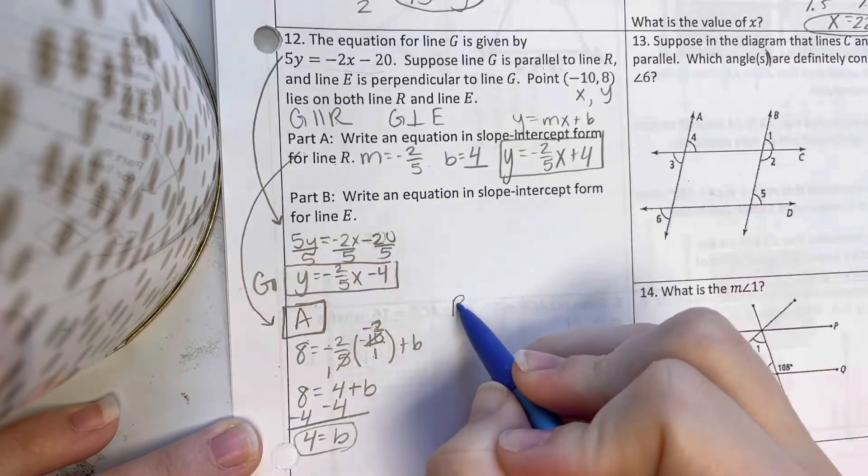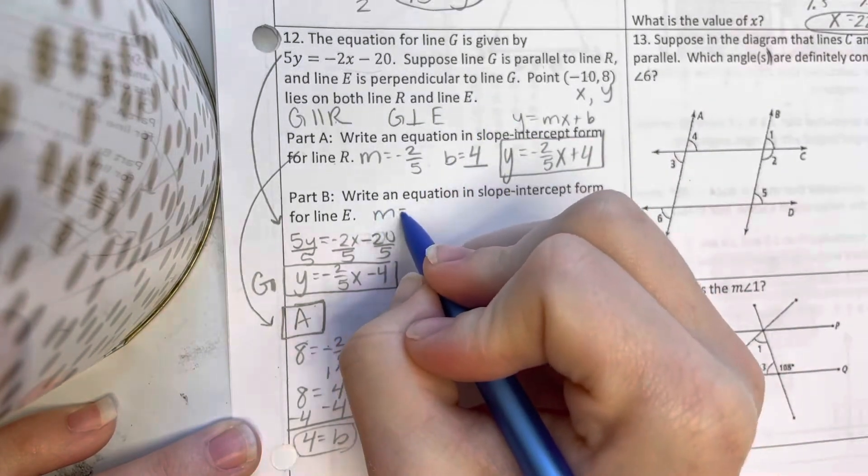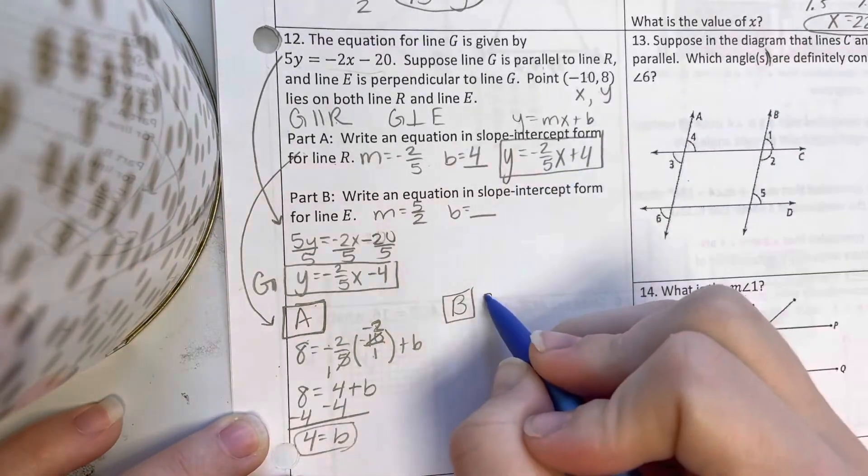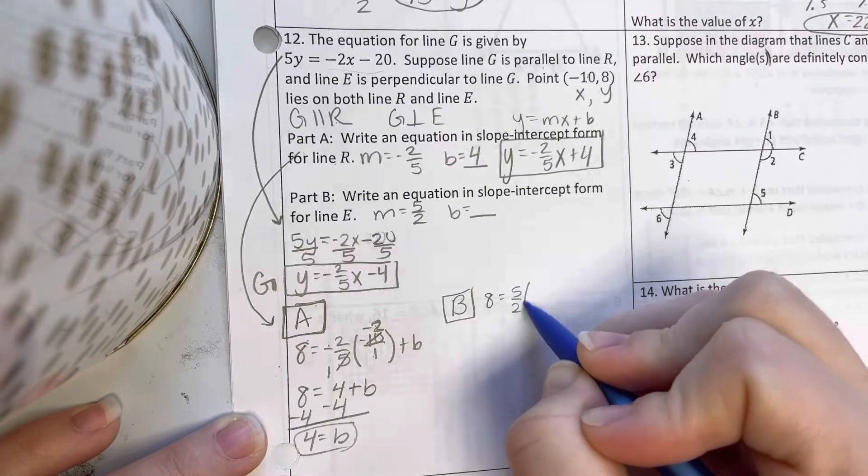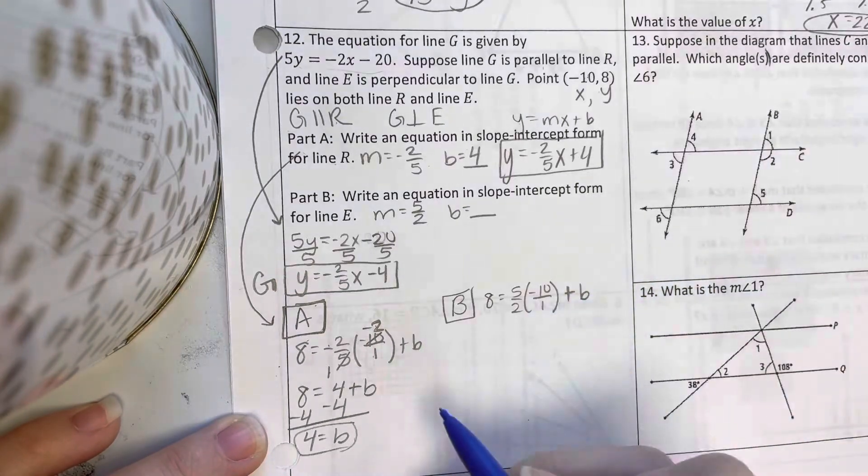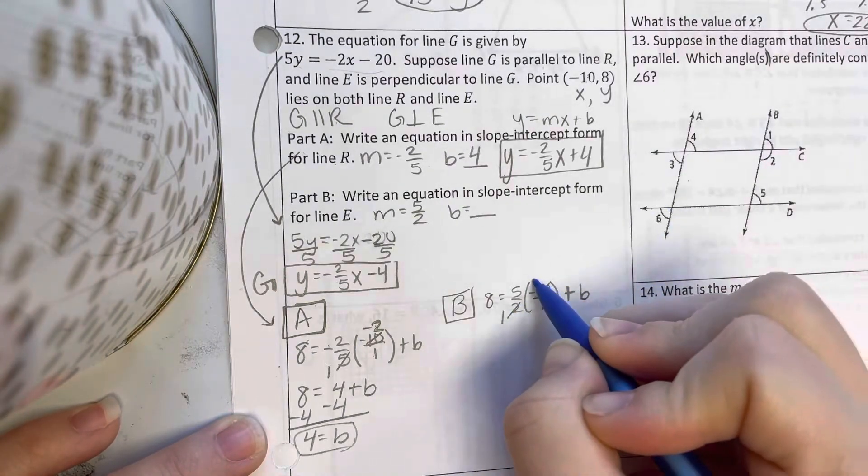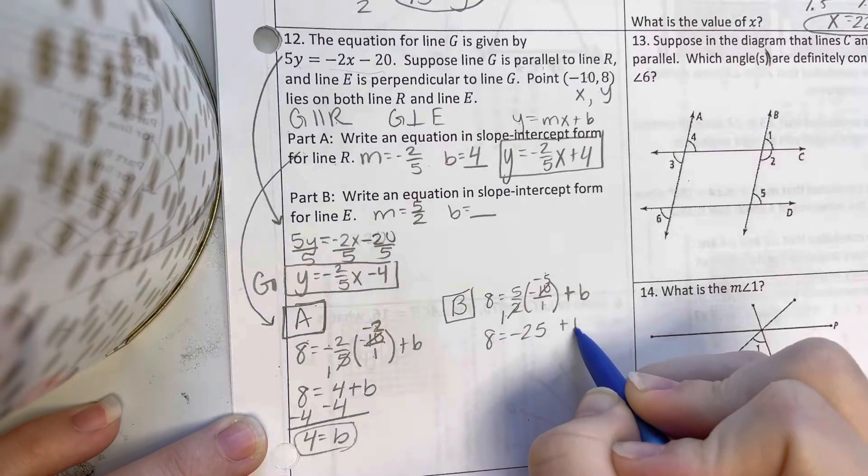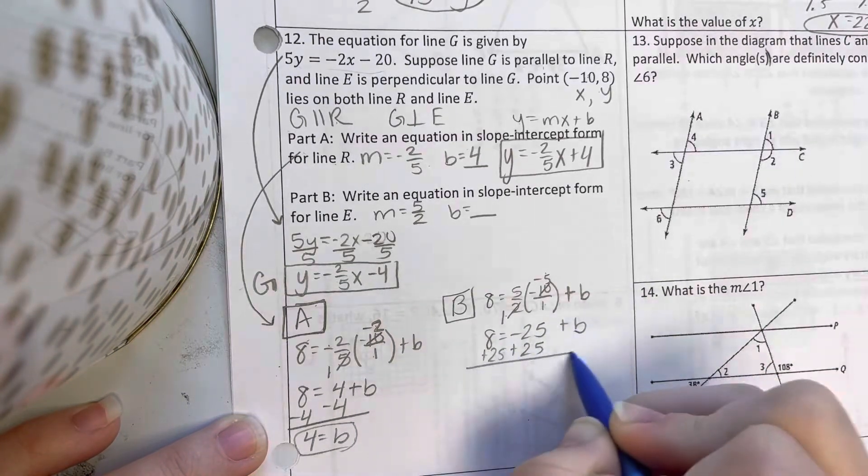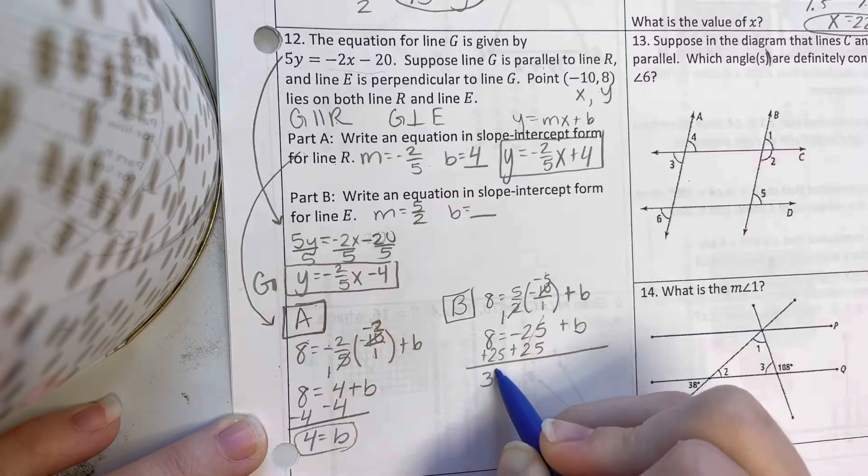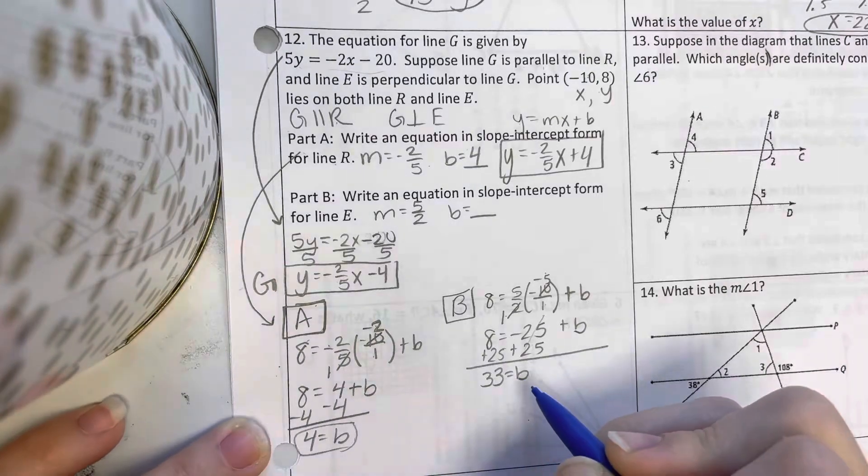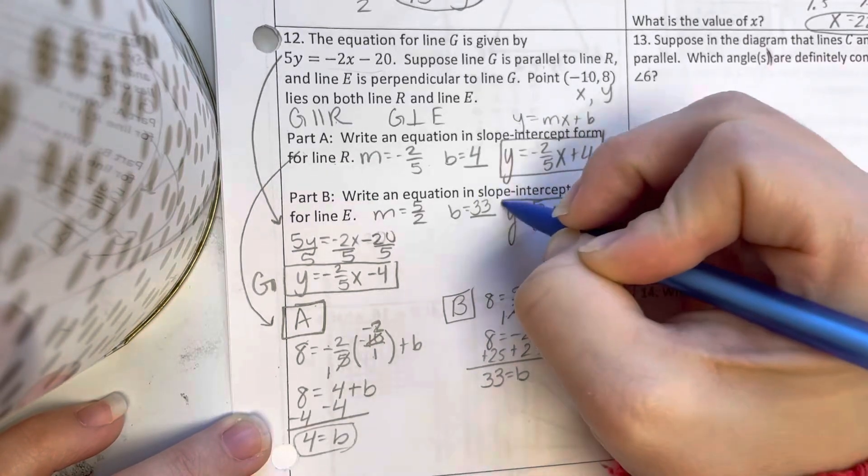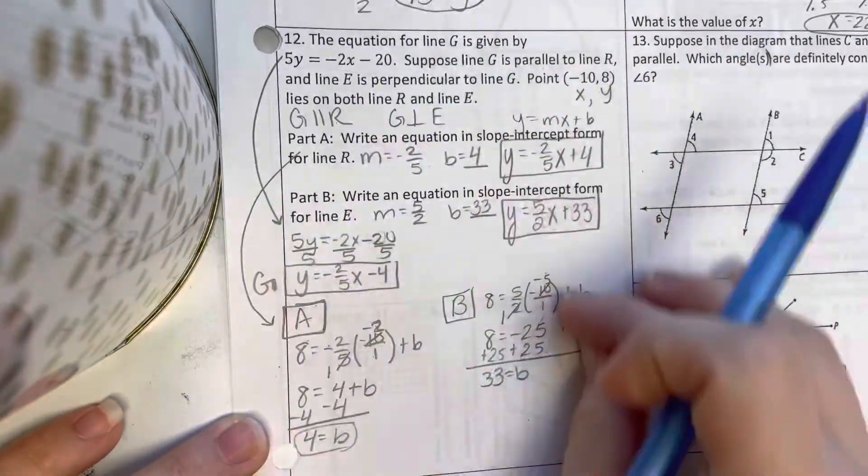All right, now for part B. This one, G and E are perpendicular. So I want to use the opposite reciprocal of this. So positive 5 over 2. I need to find B. Again, I'm using this point. So 8 equals 5 over 2. Here I'm going to cross-simplify. Divide those both by 2. I get 1 and negative 5. So I have 8 equals 5 times negative 5 is negative 25. 1 times 1 on the bottom is not needed. Add 25. So 33 equals B. So I get Y equals 5 over 2X plus 33. We've been doing a lot of these. So this should be hopefully very familiar at this point.